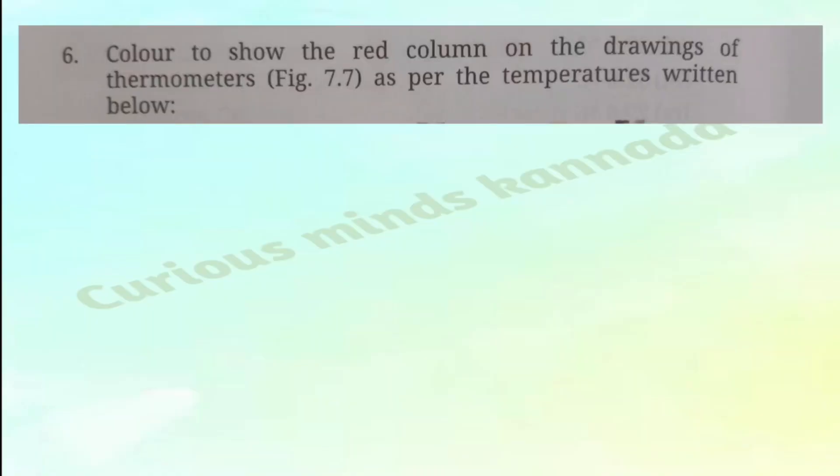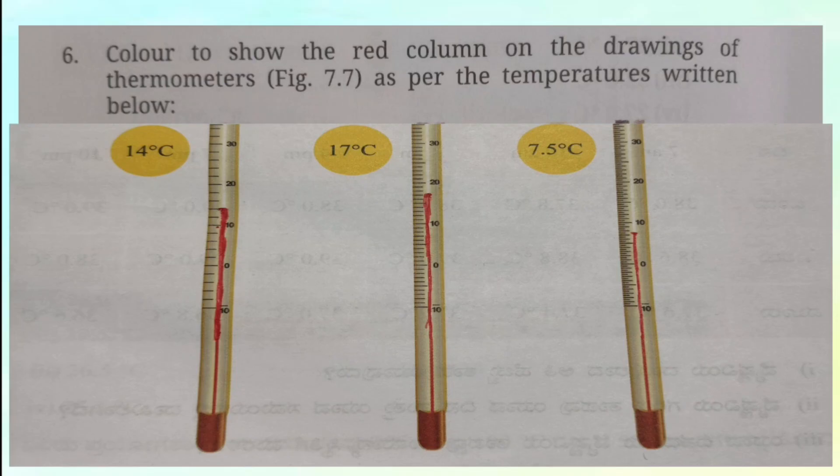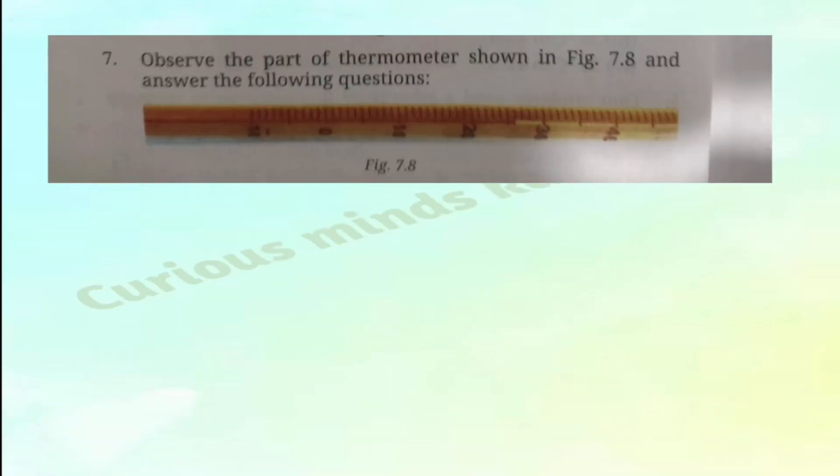Sixth question: Color to show the red column on the drawing of thermometers in figure 7.7 as per the temperature written below. The temperatures shown are 14 degree Celsius, 17 degree Celsius, and 7.5 degree Celsius. You can do it the same way in your textbook.